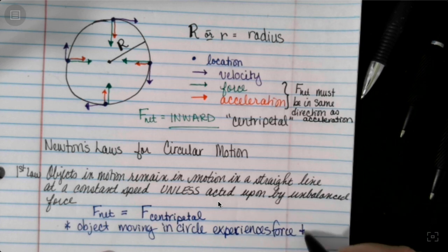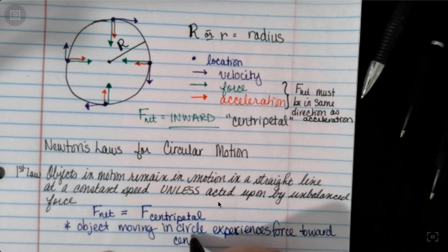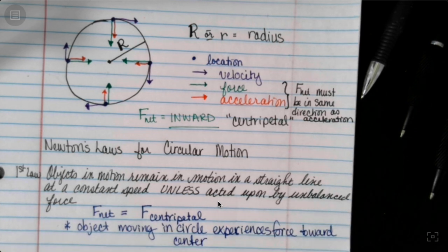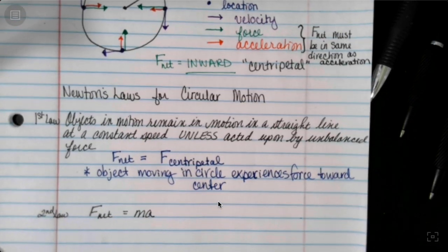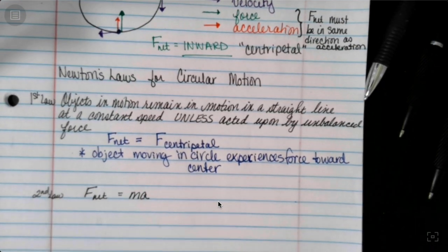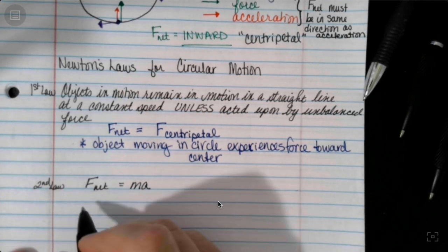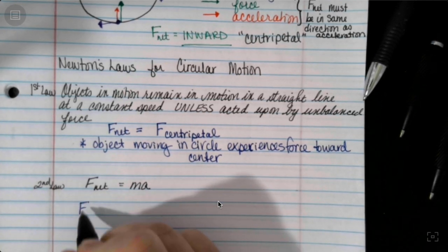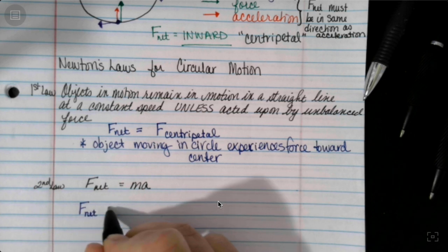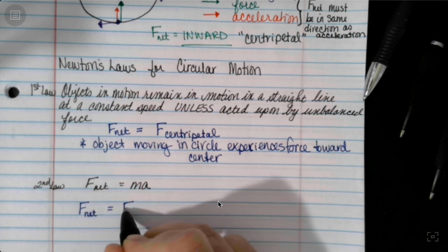So that force towards the center is going to be super helpful. When we get to our second law that F net is equal to MA, we've already said that the net force is the force centripetal. So we can say that the net force is just going to be the centripetal force.